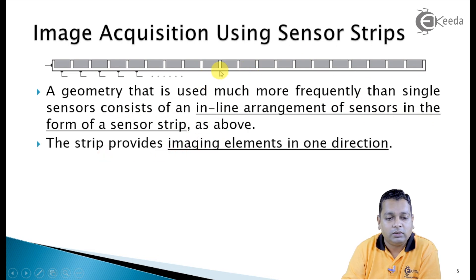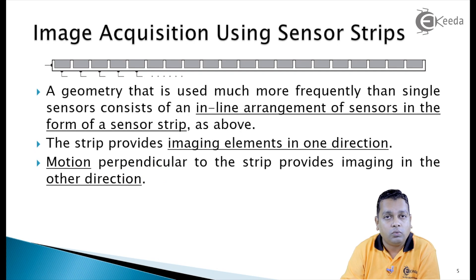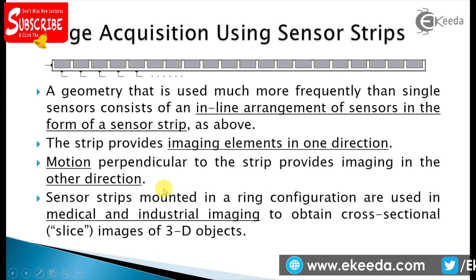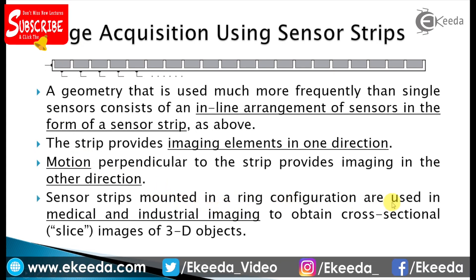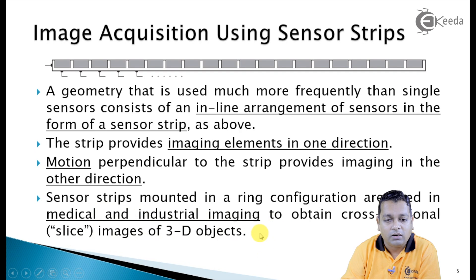The sensors are arranged linearly and the strip provides imaging elements in only one direction, so motion is still required — but only in one direction, perpendicular to the strip, to provide imaging in the other direction. Sensor strips mounted in a ring configuration are used in medical and industrial imaging equipment to obtain cross-sectional images of 3D objects. Examples include MRI and CT scan (computerized tomography) images, which are slice images obtained by such arrangements.